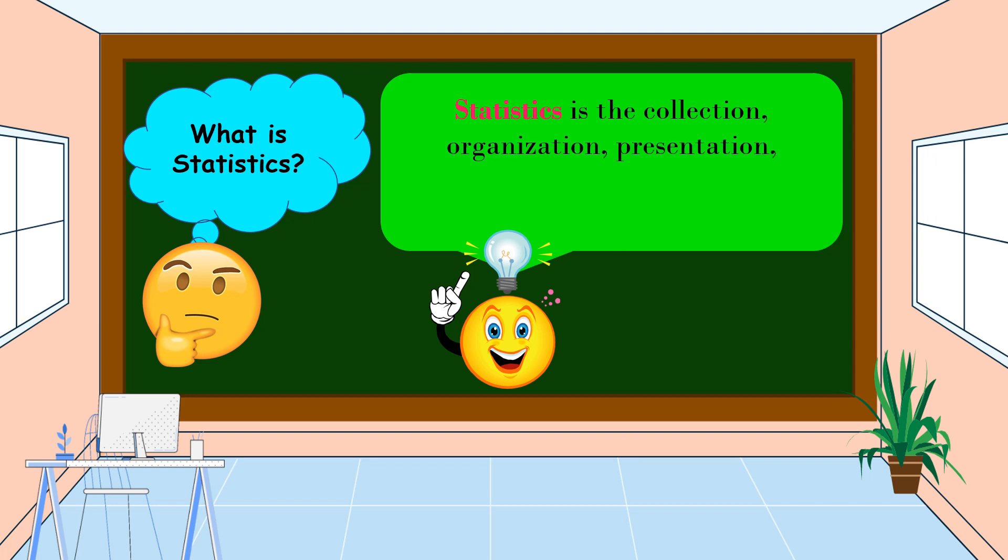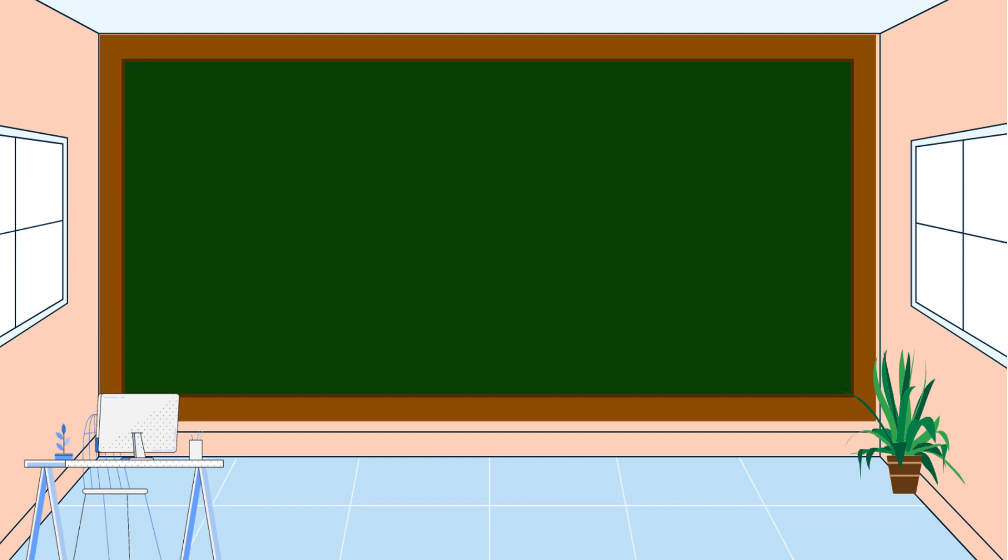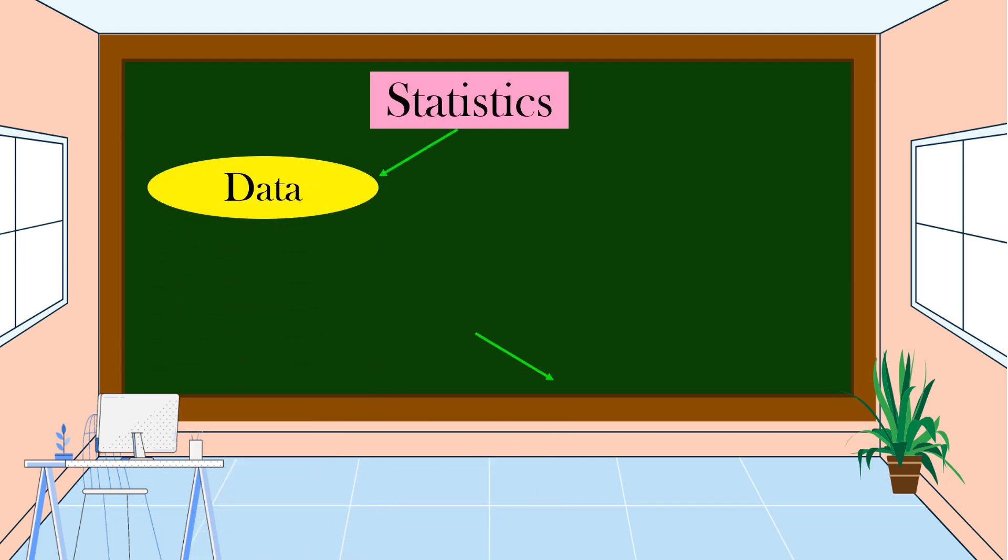What is statistics? Statistics is the collection, organization, presentation, interpretation, and analysis of data. There are two important elements in statistics: one is data and the other one is variables.